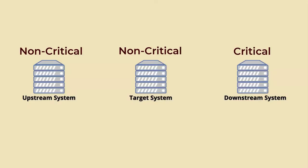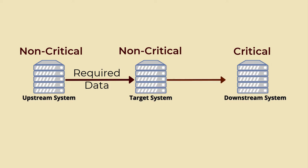Another consideration is understanding upstream dependencies. If a system listed as not critical feeds information to your critical system, its priority just went up. You can't wait until your complete inventory is done before starting vulnerability hunting. Once you have all the system and safeguard inventories completed for a critical process, start looking.